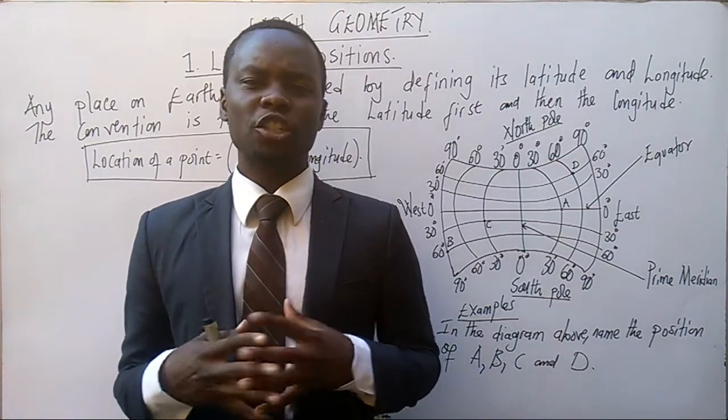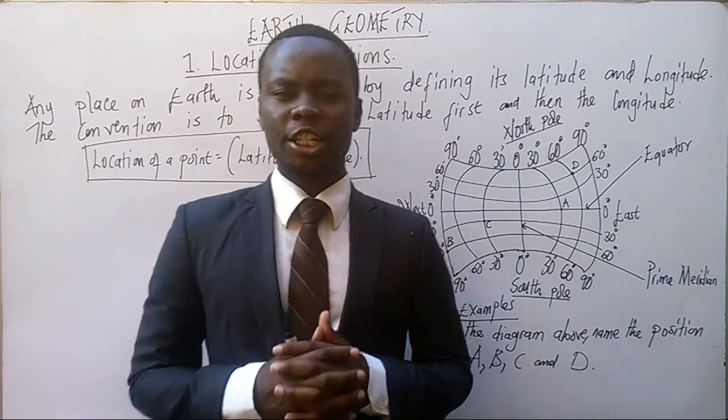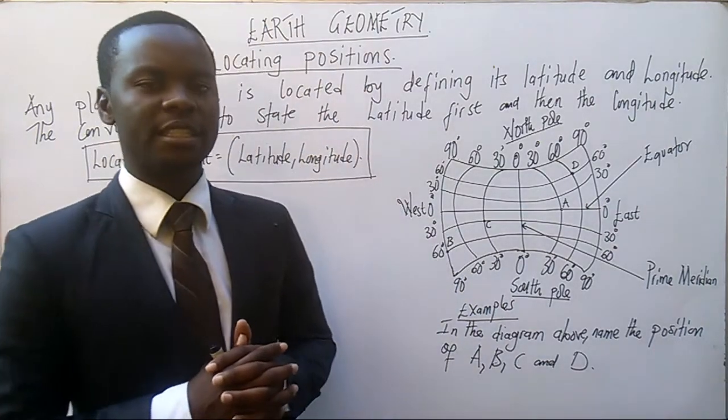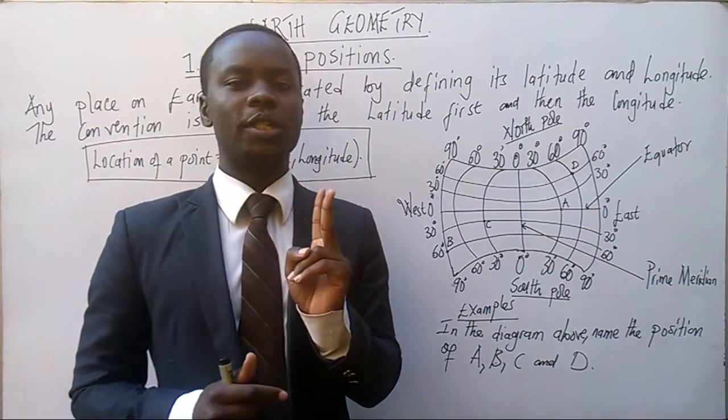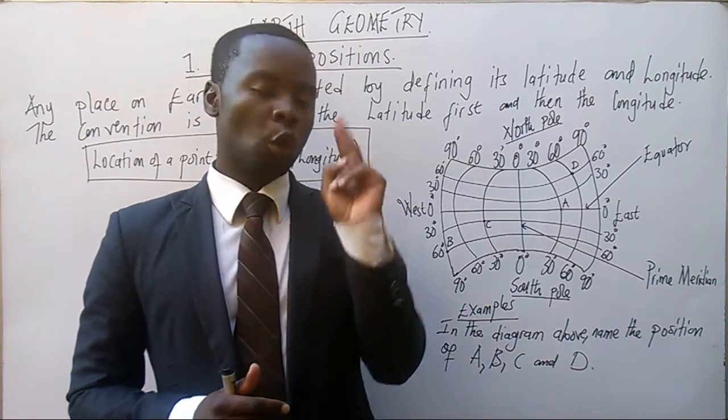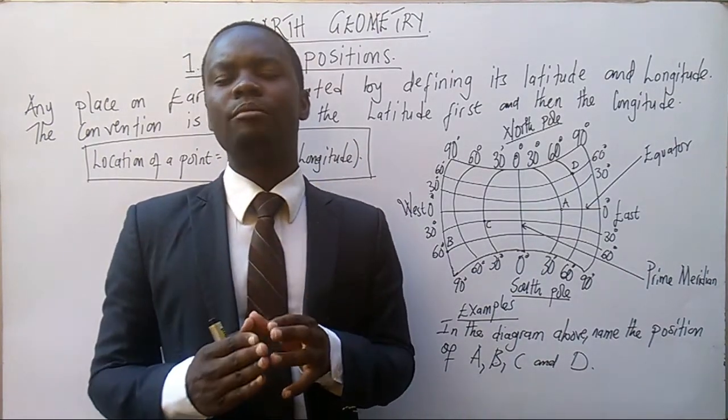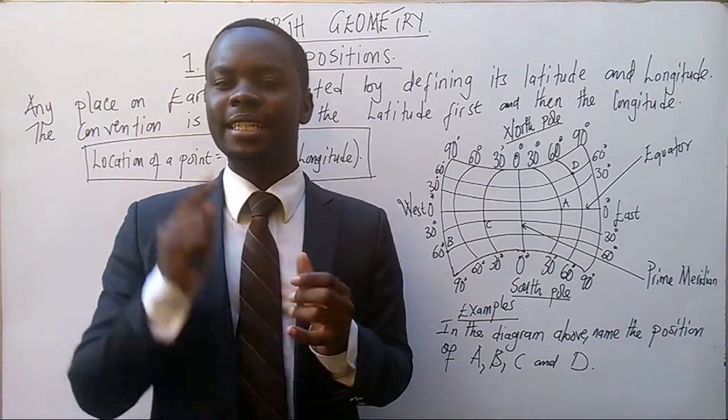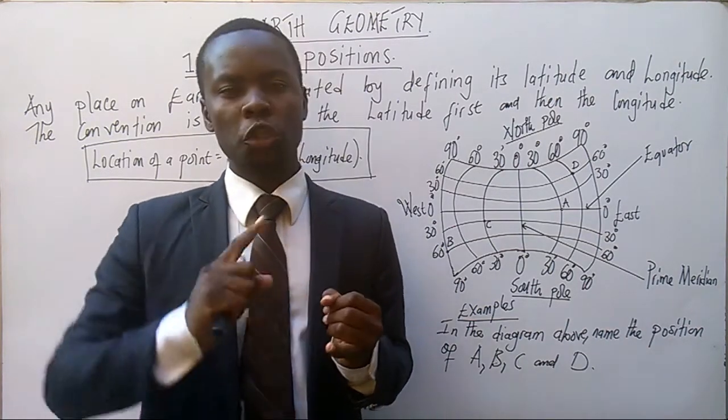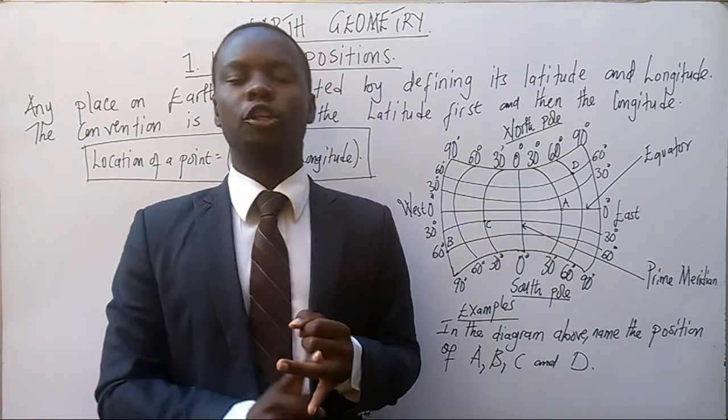What you must know about location of points on the Earth's surface is the two lines, which are latitudes and longitudes. Endpoints on the Earth's surface can be located by stating its latitude and also stating its longitude.